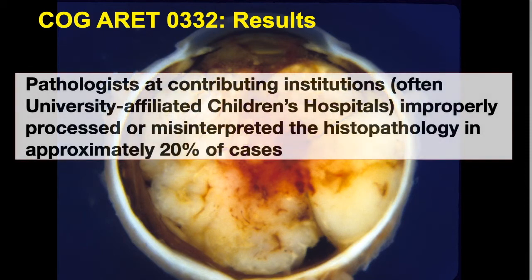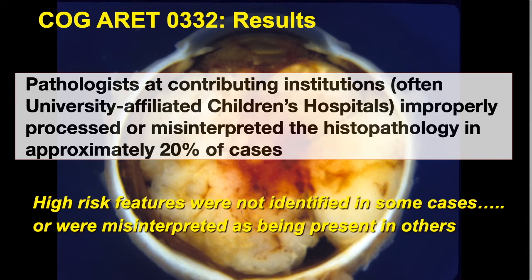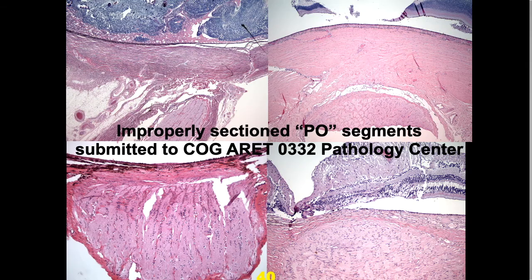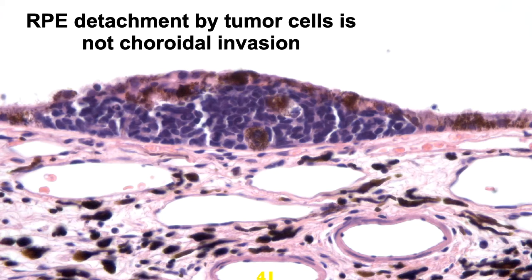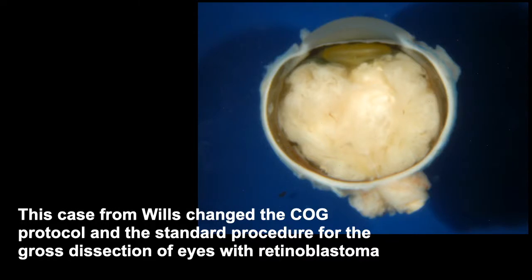The COG study also found that contributing pathologists at institutions — often university-affiliated children's hospitals — improperly processed or misinterpreted histopathology in about 20% of cases. High-risk features were not identified in some eyes and were misinterpreted as being present in other eyes. Some PO segments submitted did not include the optic nerve head, which is what we need to look at carefully. Other pathologists misinterpreted sub-RPE tumor as choroidal invasion — it's not choroidal invasion, it's not behind Bruch's membrane — and others misinterpreted artifacts as contamination of the choroid.